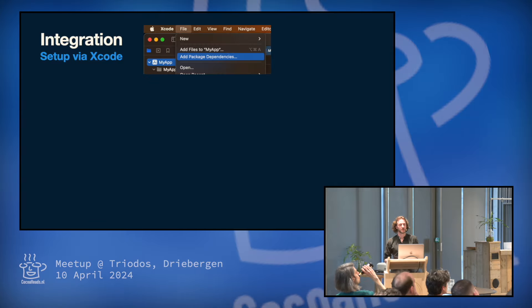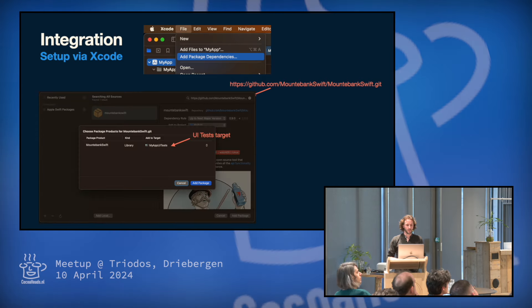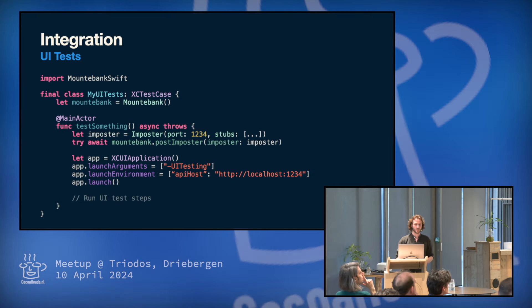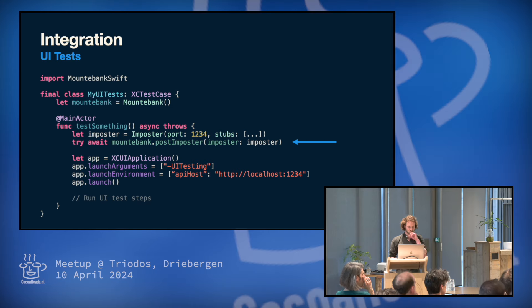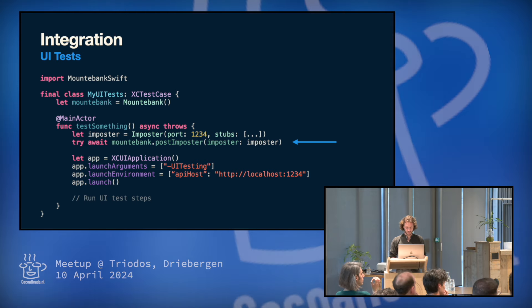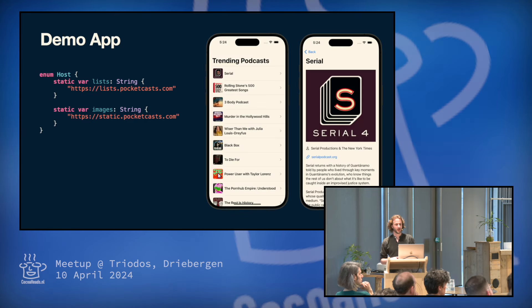So let's see how this works and how you can integrate it into your project. The integration is quite simple — in Xcode you just say File, and you add it as a package, and then you add it to your UI test target. And then in your test you do the following: you create a Mountain Bank client, and then in your test you create an imposter with a list of stubs, and you post imposters to Mountain Bank. And then in your app, when you launch the app you basically set your UI testing flag and you pass along the server that it's running on, and you say launch.